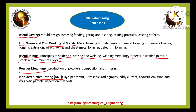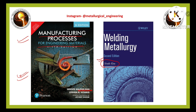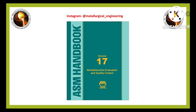Important books for manufacturing processes: first, 'Manufacturing Processes for Engineering Materials' by Kalpakjian, which covers casting, hot working, warm working, rolling, forging, extrusion, and more. For welding, follow a welding metallurgy book by Professor Asinode Ghosh. For non-destructive testing, follow the ASM Handbook on Non-Destructive Evaluation and Quality Control, which covers dye penetrant testing, magnetic particle inspection, ultrasonic testing, and radiography.